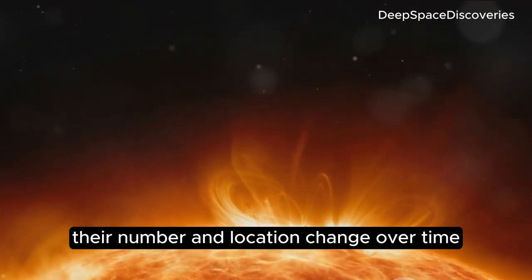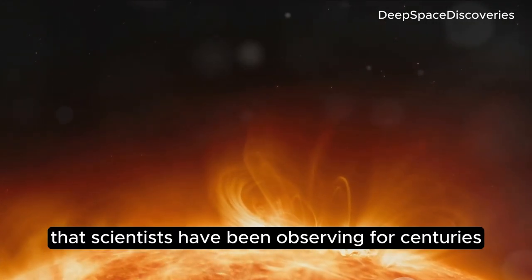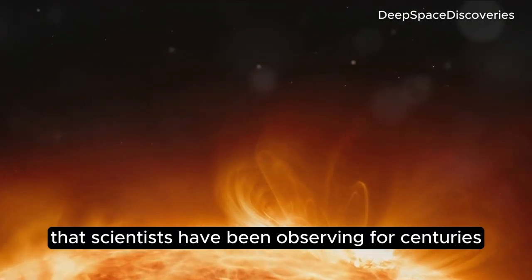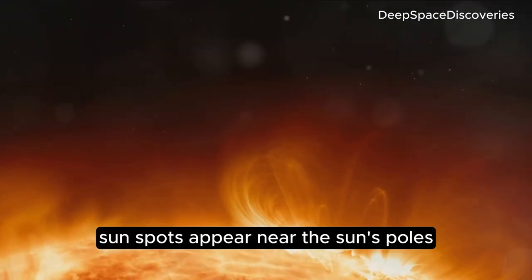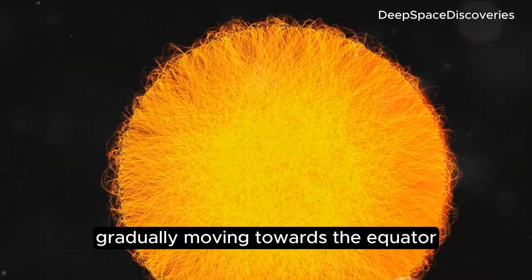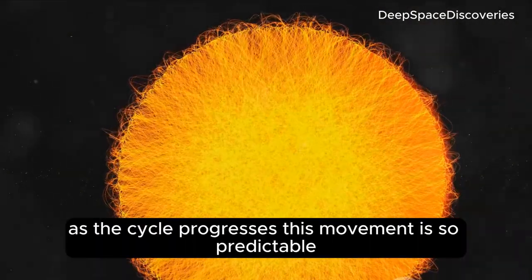Their number and location change over time, following a pattern that scientists have been observing for centuries. At the start of a cycle, sunspots appear near the Sun's poles, gradually moving towards the equator as the cycle progresses.